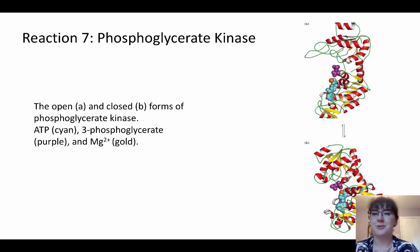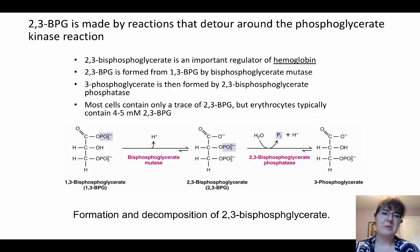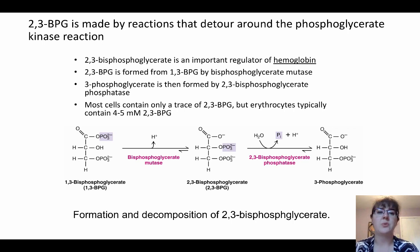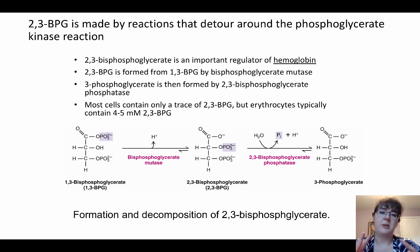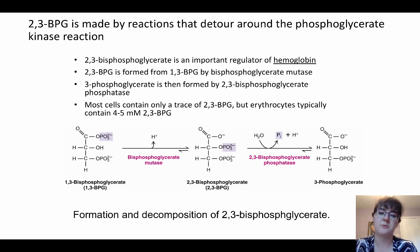Phosphoglycerate kinase has a somewhat similar clamshell hinge ability to hexokinase. 2,3-BPG, which we mentioned when discussing hemoglobin, is made by reactions that detour around this phosphoglycerate kinase reaction. Starting from 1,3-bisphosphoglycerate, bisphosphoglycerate mutase produces 2,3-bisphosphoglycerate. This 2,3-BPG gives hemoglobin that sigmoidal-shaped curve for its kinetics, allowing hemoglobin to drop off its oxygen load. When done, 2,3-bisphosphoglycerate phosphatase removes a phosphate group to give 3-phosphoglycerate, which continues down the glycolytic pathway.